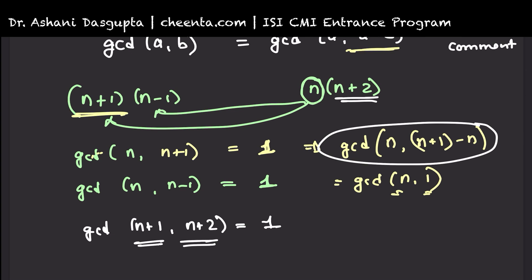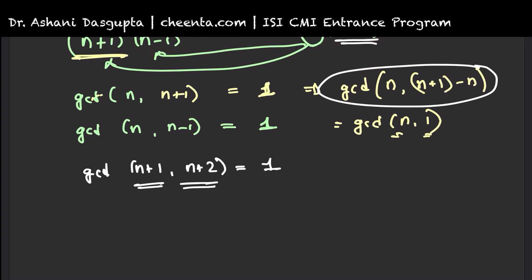The only thing that remains is n plus 2 and n minus 1. Let's do that. GCD of n plus 2 and n minus 1 is the same as GCD of n minus 1 comma n plus 2 minus n plus 1. Again, I am using Euclidean algorithm. This is same as GCD of n minus 1 comma 3.